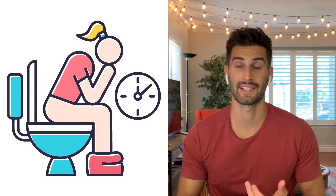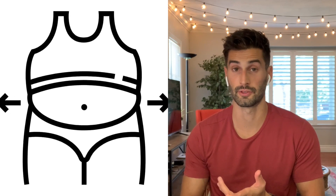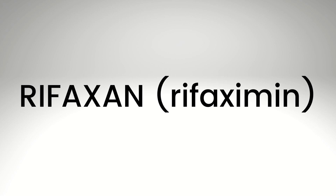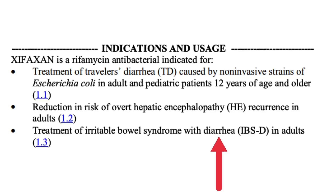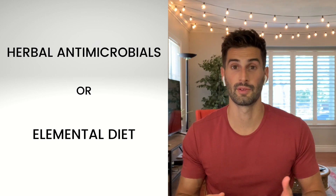The symptoms caused by methane dominant SIBO include chronic constipation, which is more likely to happen, as well as weight gain and body fat increases. In terms of treatment, most evidence shows that antibiotics such as Rifaximin aren't ideal because these organisms aren't actually bacteria. Rifaximin is also indicated only for irritable bowel syndrome with diarrhea, so it's really not suited for this more constipation-type condition. The herbal antimicrobials or the elemental diet will likely be better options for treating this type of SIBO.